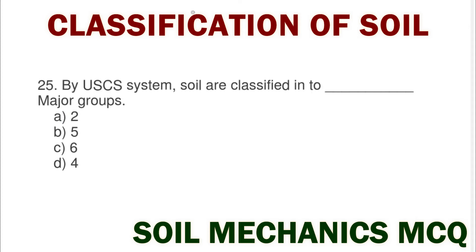Next question: by the USCS system, soils are classified into how many major groups? Option A 2, option B 5, option C 6, option D 4. The correct answer is option D 4.